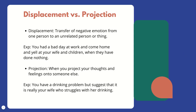Displacement versus projection — these are two that people commonly get mixed up. Displacement is the transfer of negative emotion from one person to an unrelated person or thing. I'm mad, so I take it out on someone else or an object. Example: you've had a bad day at work and come home and yell at your wife and children. They had nothing to do with it. Often with displacement, we displace our negative feelings onto the people we love the most.